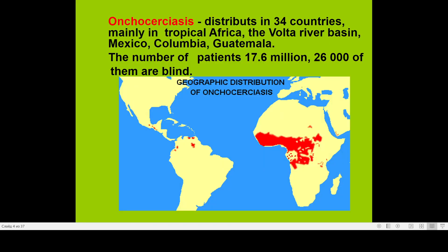Onchocerciasis is distributed in 44 countries, mainly in tropical Africa, the river regions, Mexico, Colombia, and Guatemala. The number of patients is around 17 million, and around 26 thousand of them are blind.